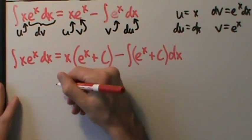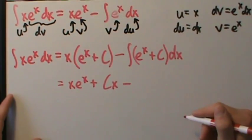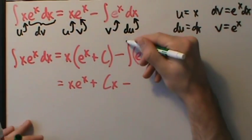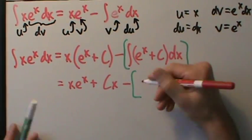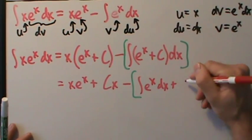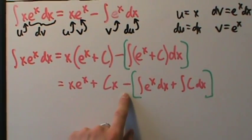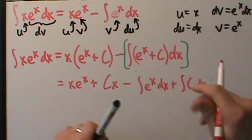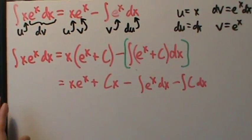So let's go ahead and simplify this. Distribute the x, so that's x e to the x plus constant times x, minus — if we split this integral up into two — we can think of this with square brackets, so that's going to be minus the integral of e to the x dx plus integral of c dx, and then we have these brackets. But if we want to drop the brackets, then we have to distribute the minus sign. So if we drop the brackets, this plus becomes a minus. That's very important.